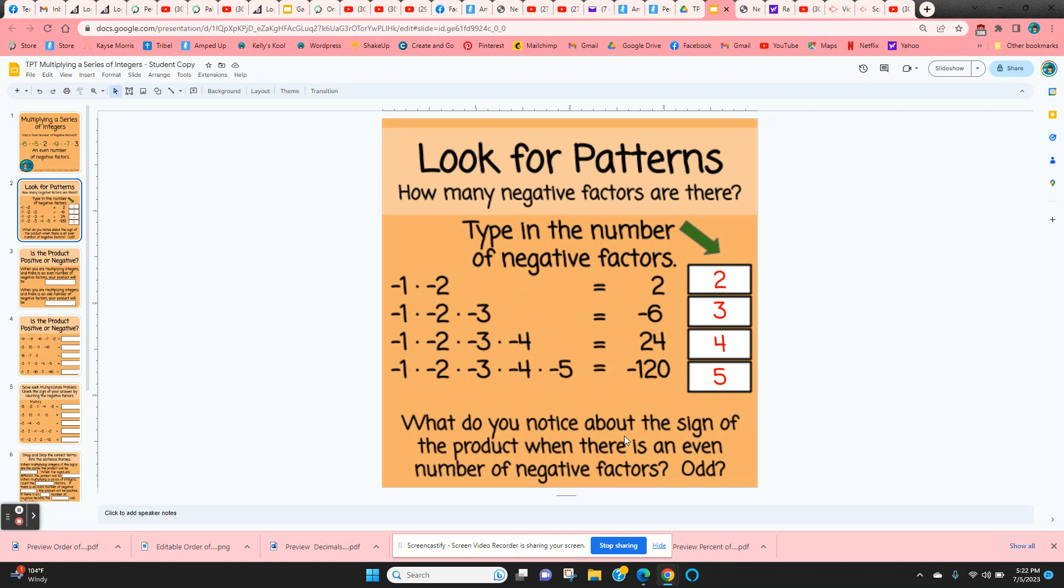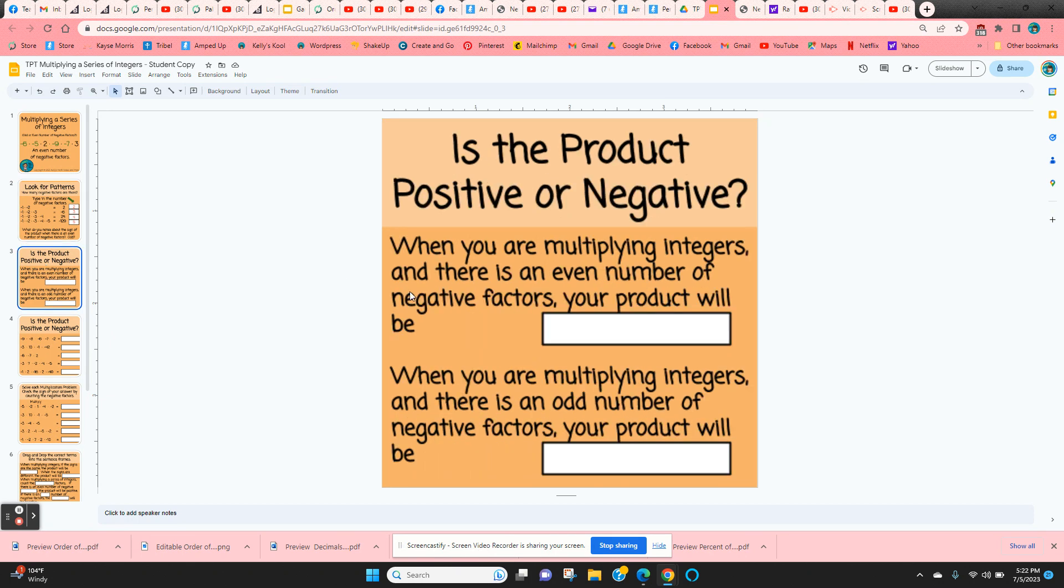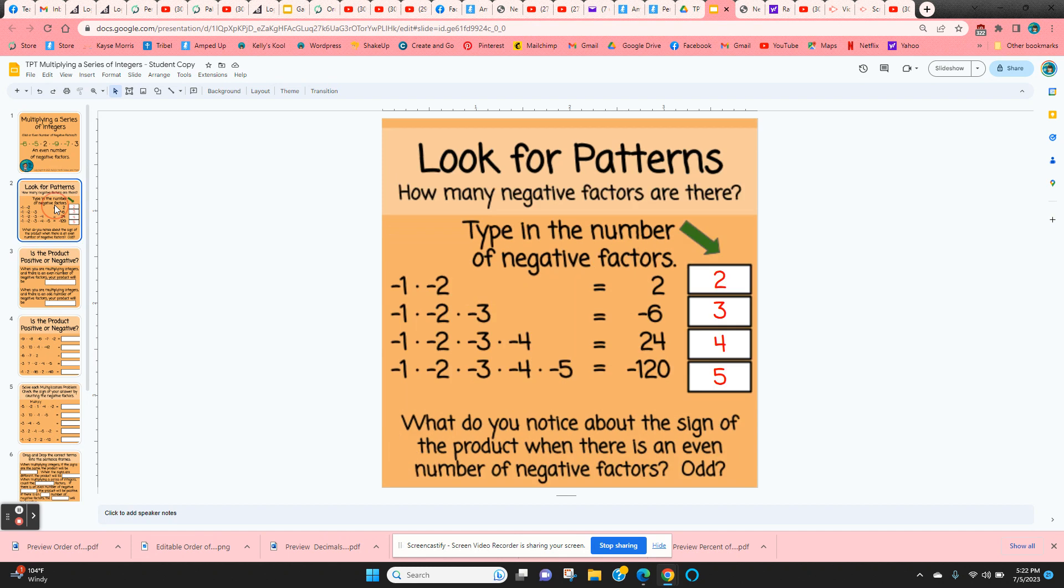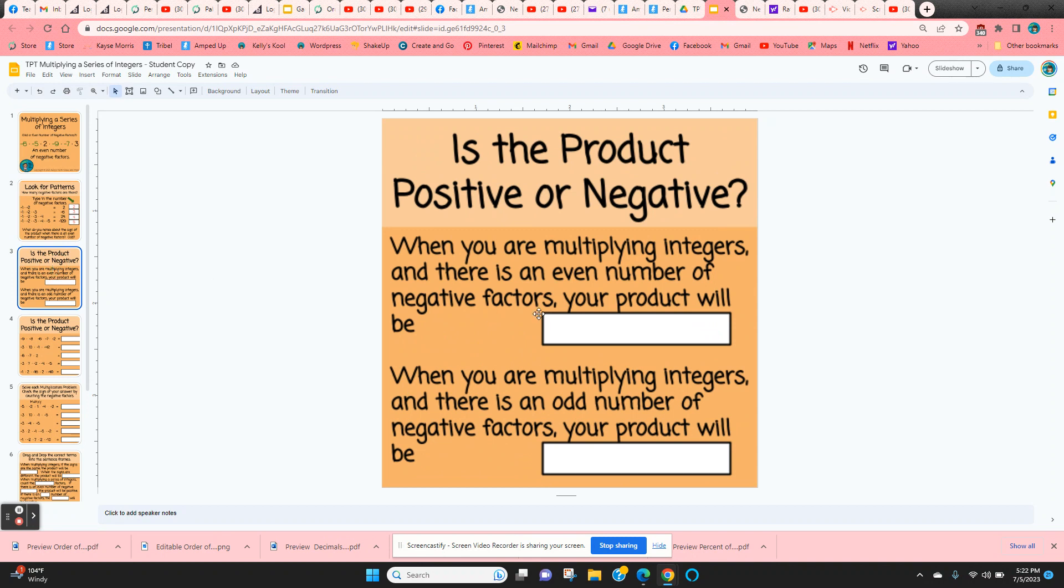Give them a minute or two. Now when they get to the next slide, if they haven't figured it out yet, this will help them. On slide three it says when you're multiplying integers, if there's an even number of negative factors your product will be positive. If there's an odd number of negative factors, their product will be negative. So they're just going to type in positive and negative.